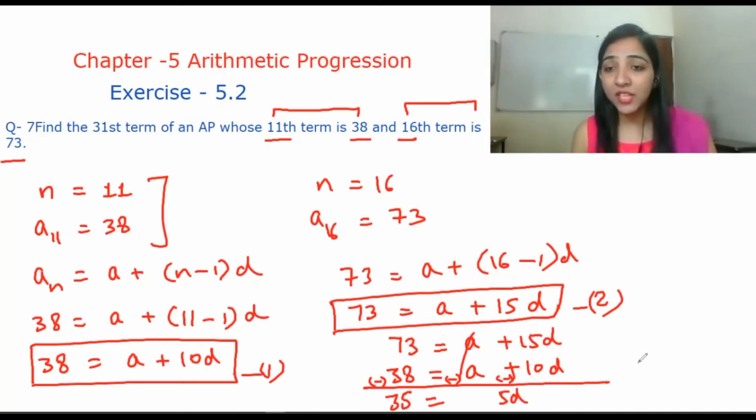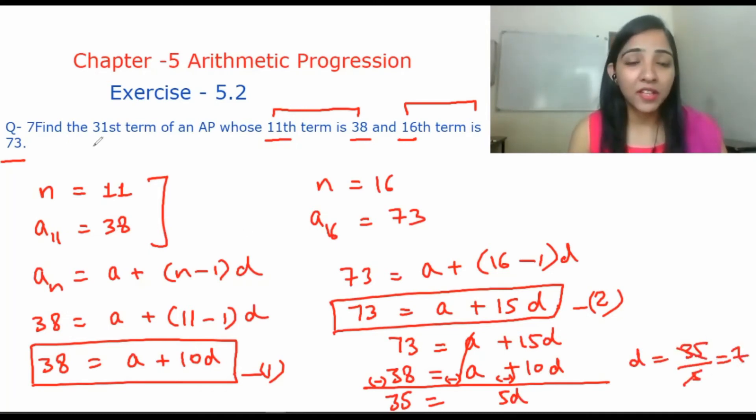So 5d is equal to 35. That means d is equal to 35 upon 5, which equals 7. So d is 7 now. And now you will find a, and then you will find the 31st term.